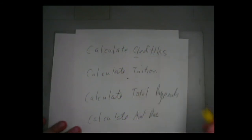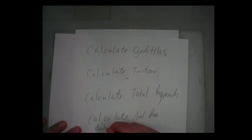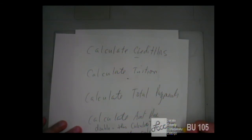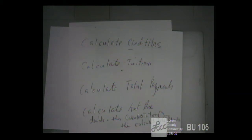Calculate amount due would simply be two function calls: something like double equals this.calculateTuition() minus this.calculateTotalPayments(). The idea of not having duplicated code is important. You wouldn't have the code that calculated the total payments duplicated — you simply call the function; it already does it. If you need the balance due, the balance due is simply the total tuition minus the total payments, so you would call the respective functions as opposed to duplicating the code.